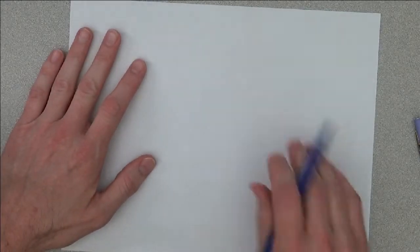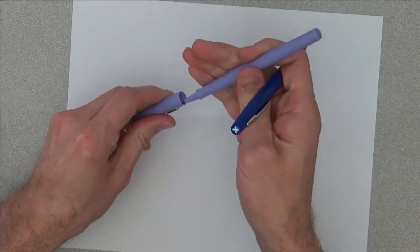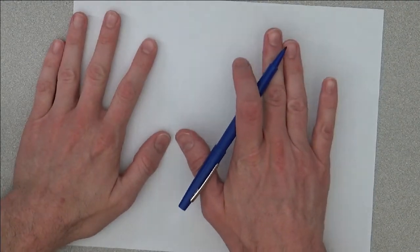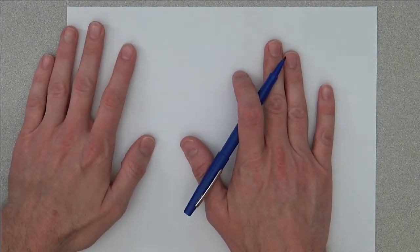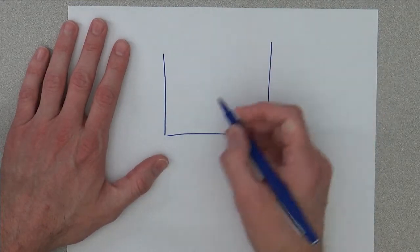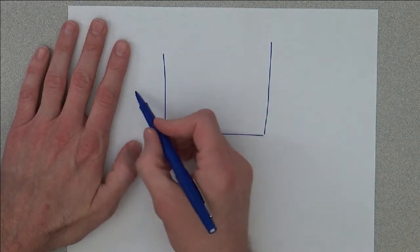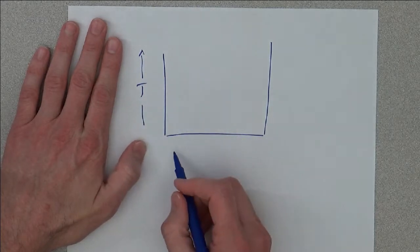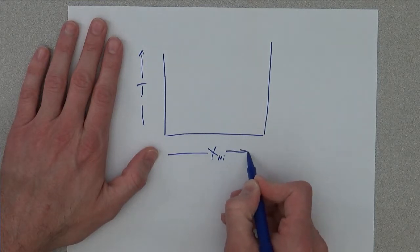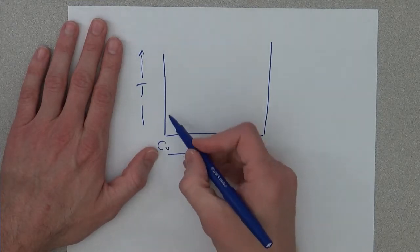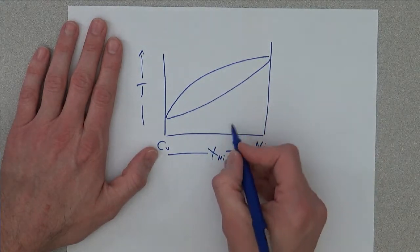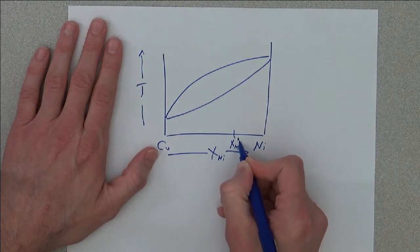Let's talk about how the microstructure changes as the system evolves with changing temperature, since we now know how the phase compositions and phase fractions change. Starting with pure nickel, pure copper, and we'll pick our X_Ni* somewhere around there.